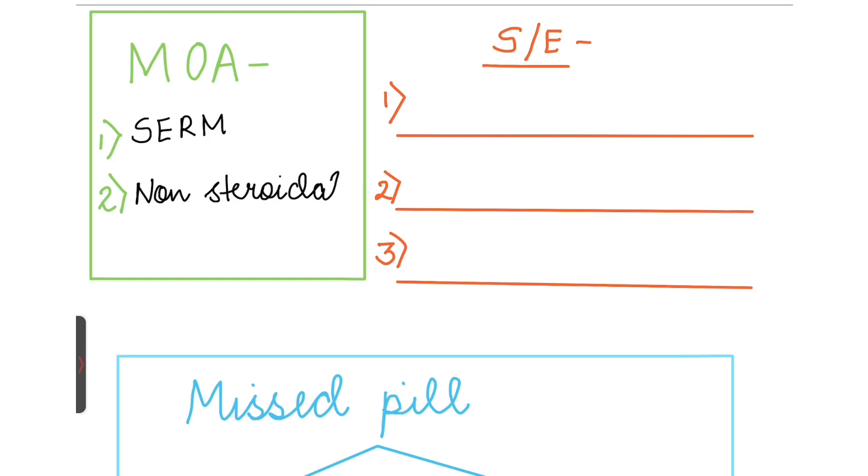The side effects are menstrual irregularities, hot flushes, and the female also has mood changes.